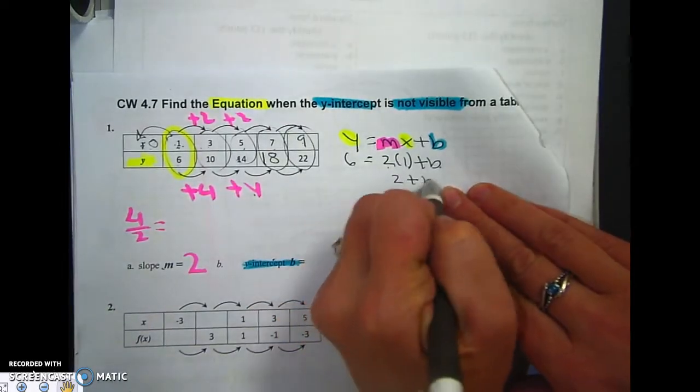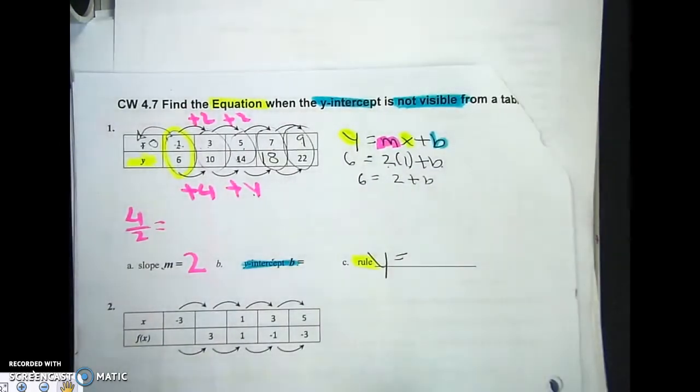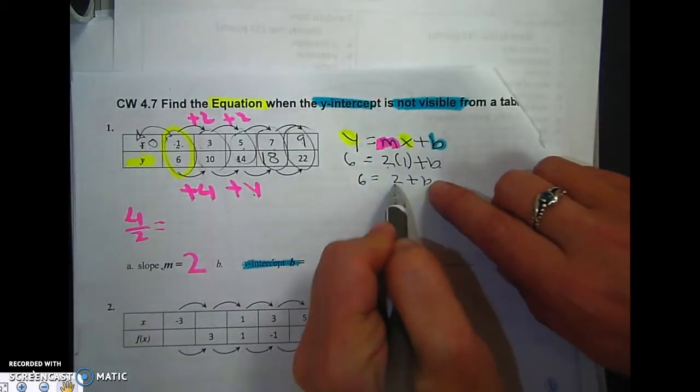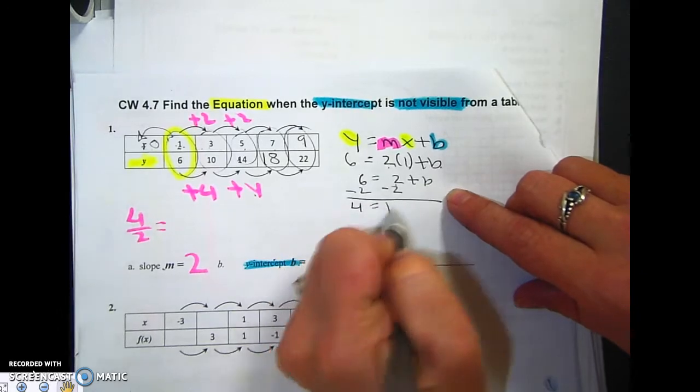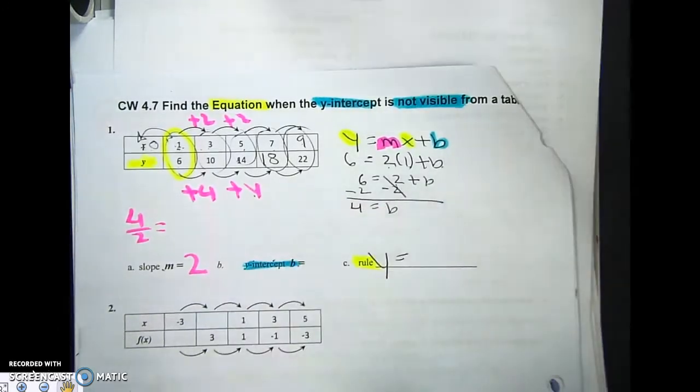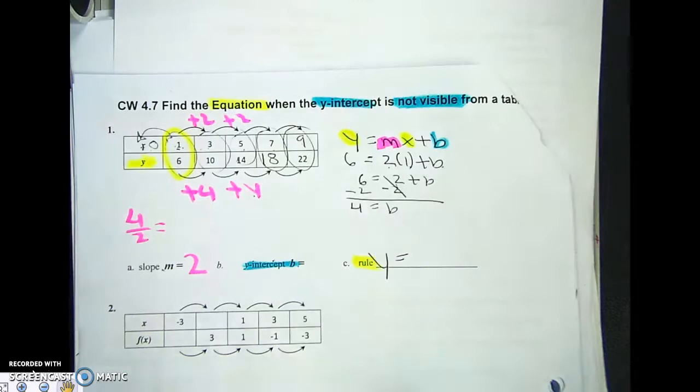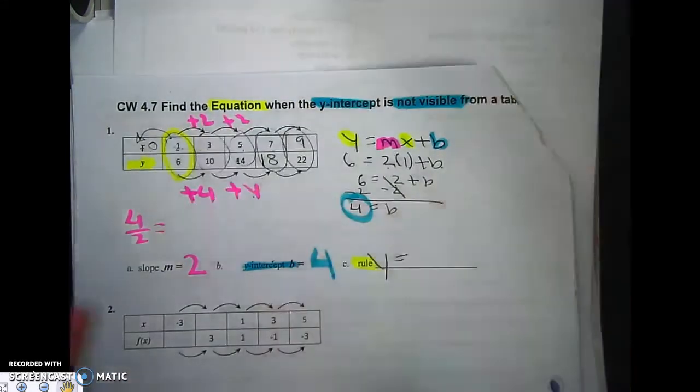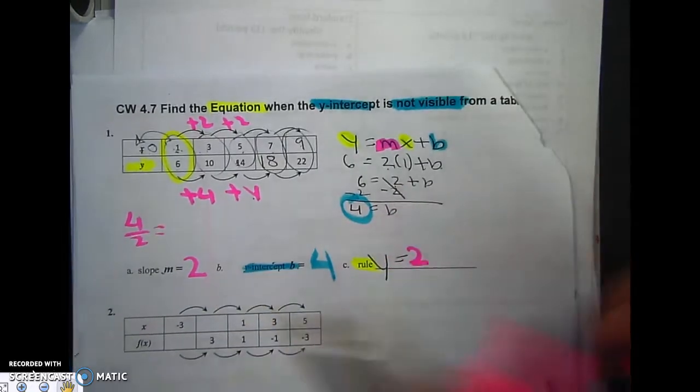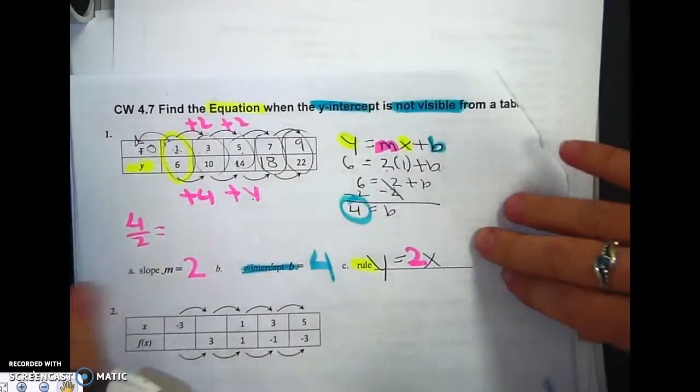2 times 1 is 2. How we get b by itself is this has got to go away, so you do the opposite. And you get 4 equals b. So I just got my b. There it is. Boom. Now I can write my equation. Y equals 2x plus 4.